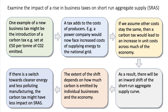Build your chain of reasoning: a tax adds to the costs of producers. For example, a power station or electricity generator would now face increased costs of supplying energy to the national grid. If we assume other costs stay the same — a ceteris paribus assumption — then a carbon tax would lead to increasing unit costs across much of the economy.